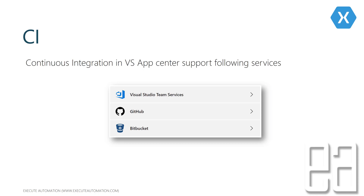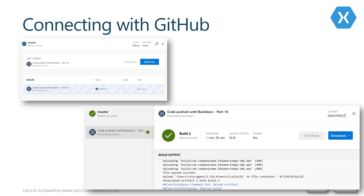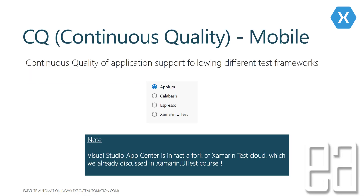You can connect your source code, build a project, and deploy and run it on multiple devices out of the box in Visual Studio App Center. It also connects with Git. For continuous quality, it supports test frameworks like Appium, Calabash, Espresso, and Xamarin.UITest.